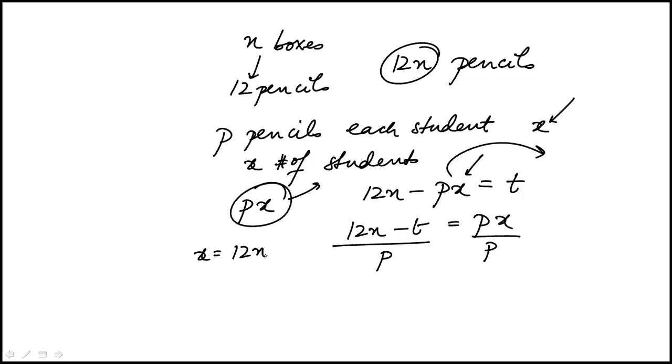And x is equal to 12n minus t over p, which is answer choice A. Thank you very much.